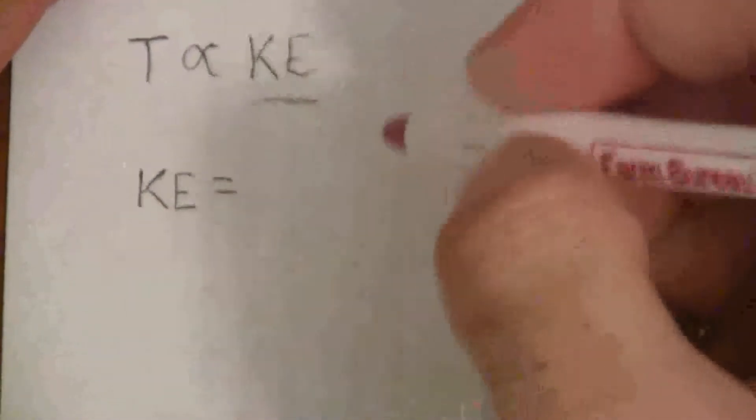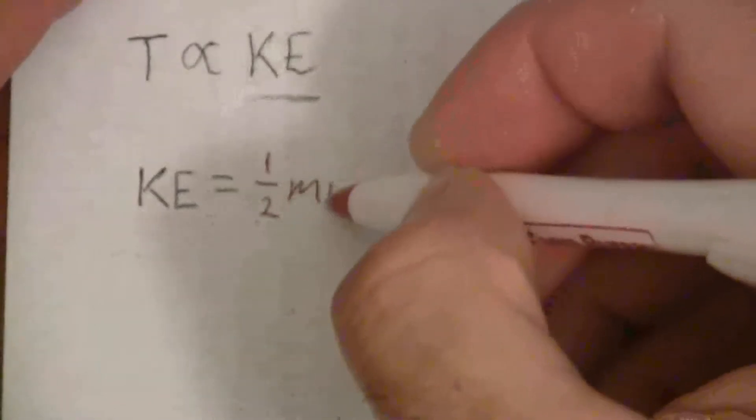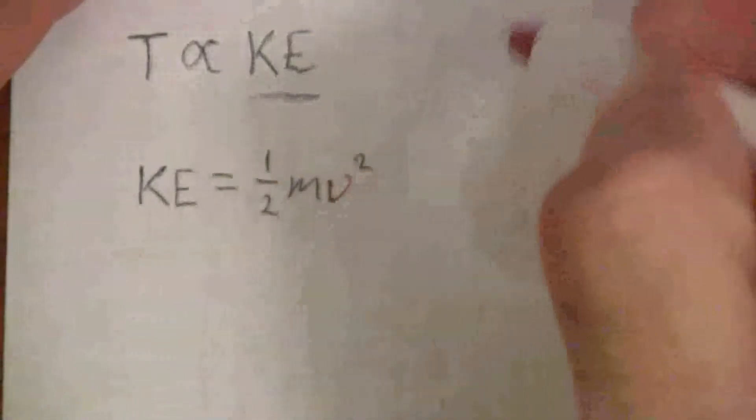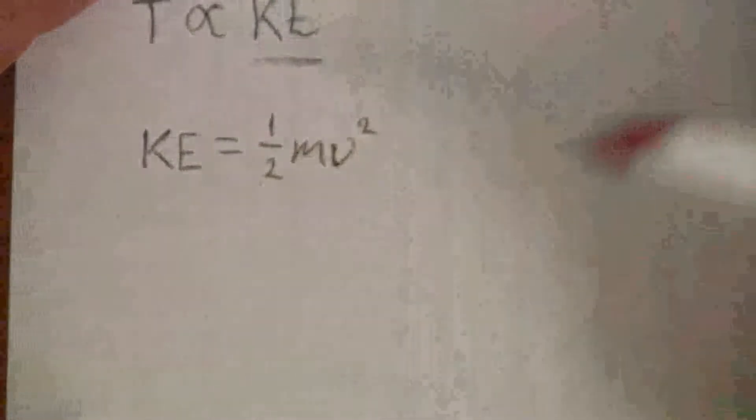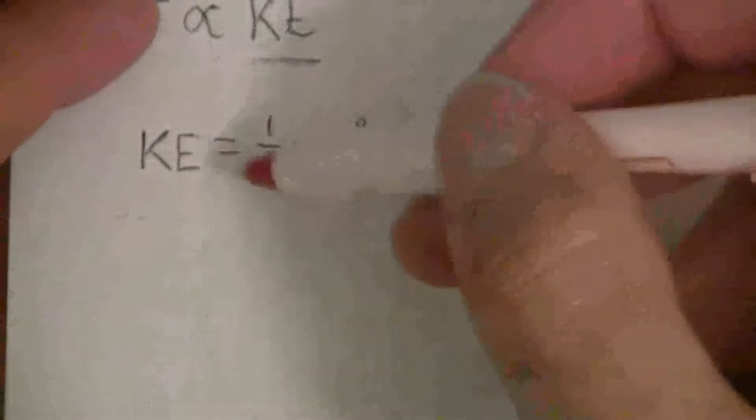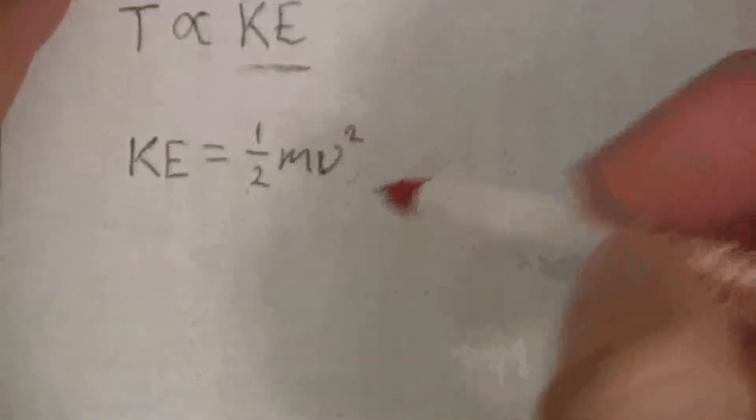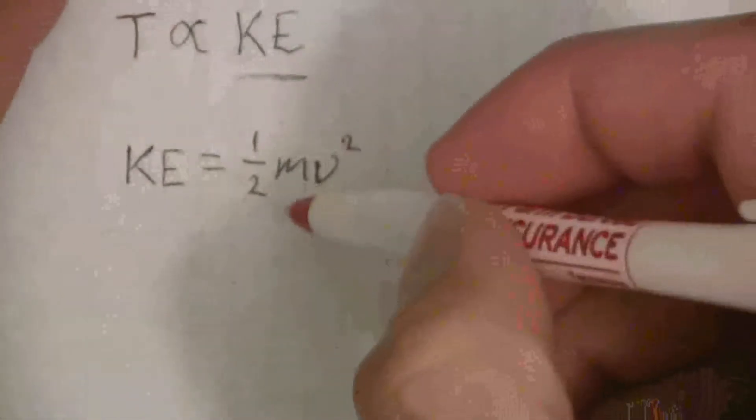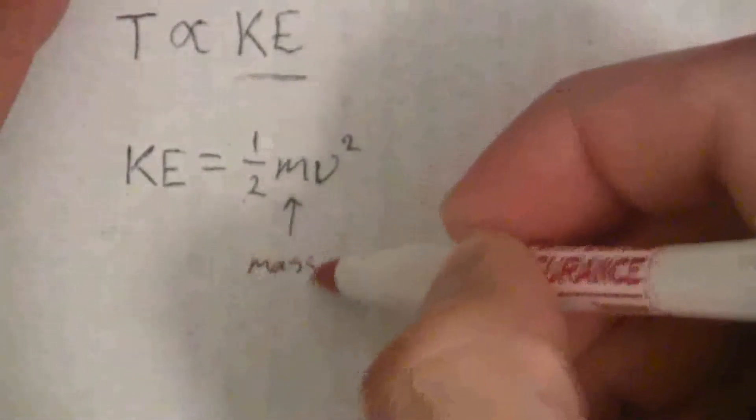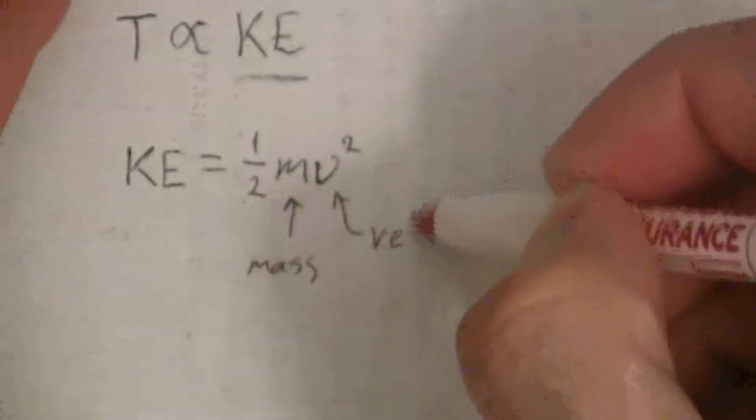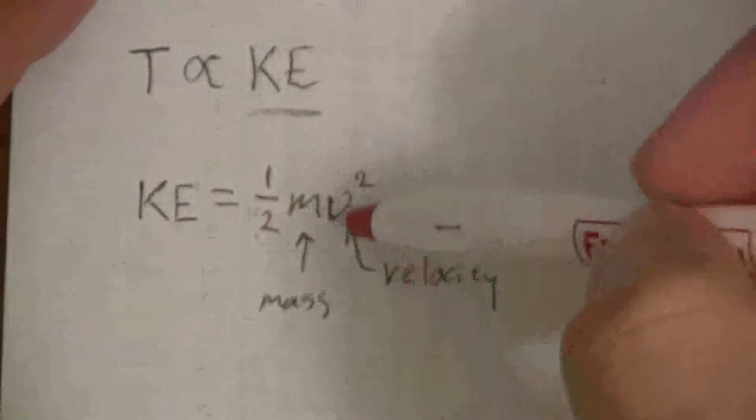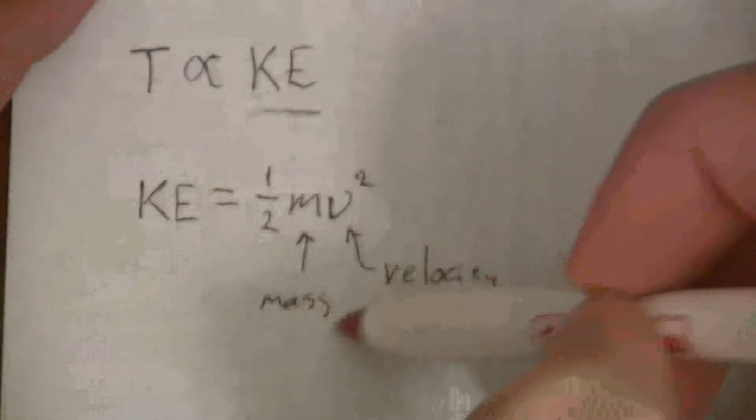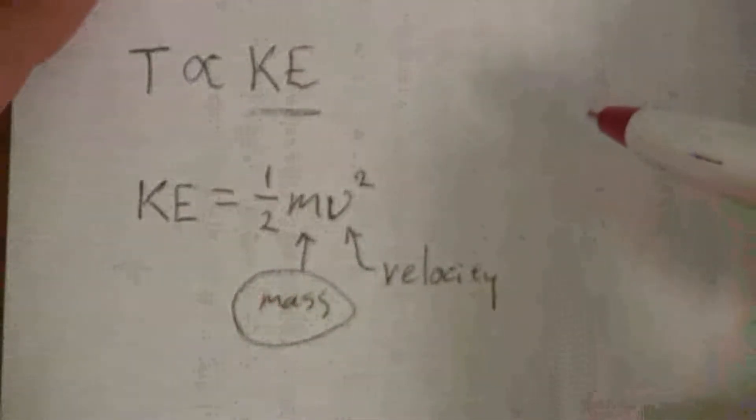The kinetic energy is, we know from physics, equal to one-half times the mass times the velocity squared. One-half mv squared, that is how we calculate the kinetic energy of a gas particle, or any object for that matter. So we see here the mass component is factored in as well as its speed or velocity. So the kinetic energy is not just about the velocity, but also the mass of the gas.